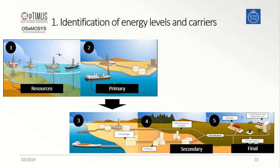Therefore, looking at this example, we can say that picture 1 represents the resource side of the system. Picture 2 corresponds to the primary energy level in our system. Picture 4 instead represents the secondary energy level, where the primary energy carrier gets converted into the refined energy commodity that is needed by the demand side. And finally, in picture 5, we have the final energy level, or the demand side of our system.